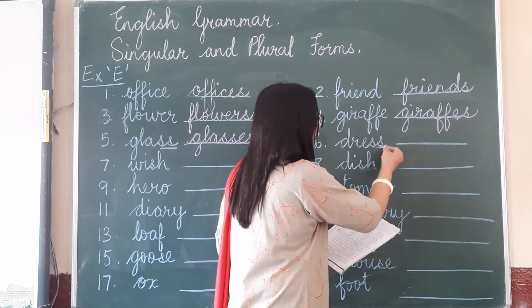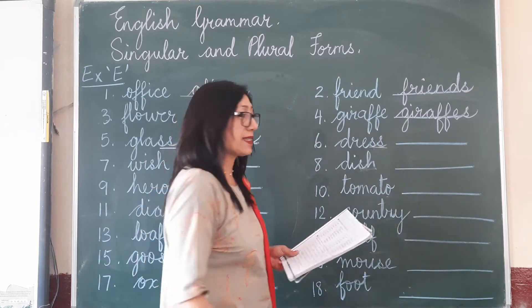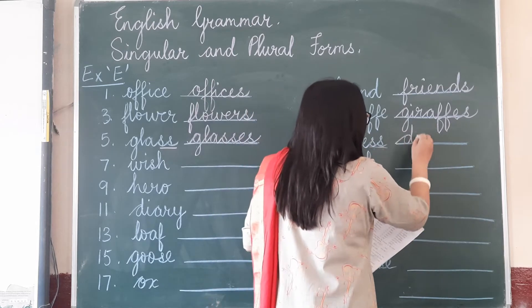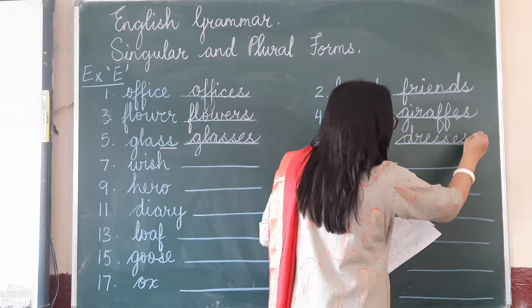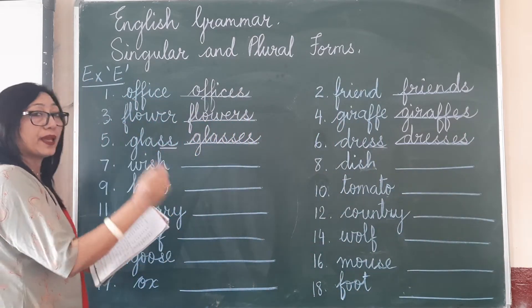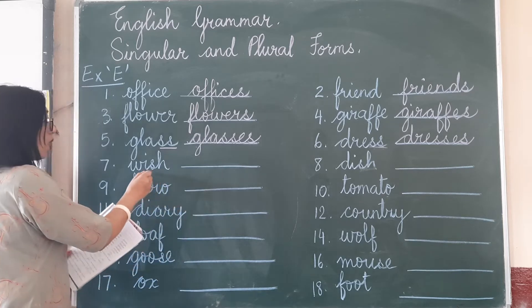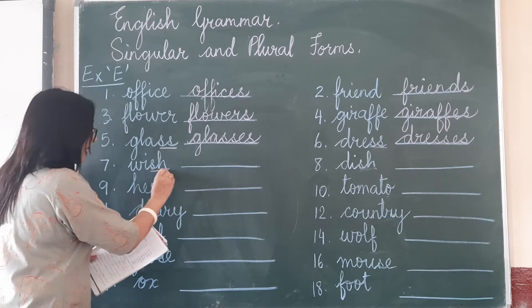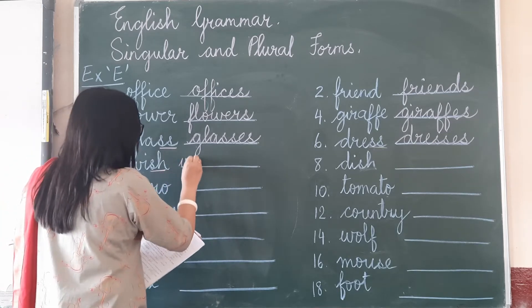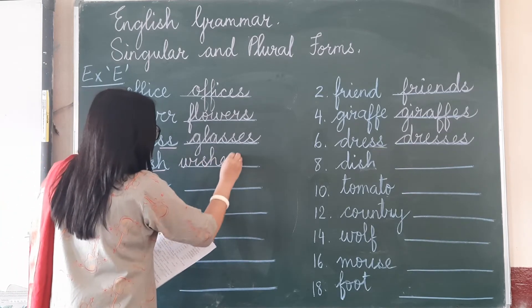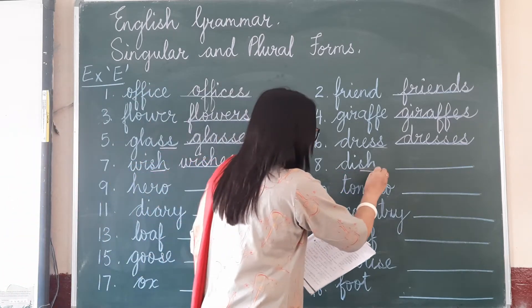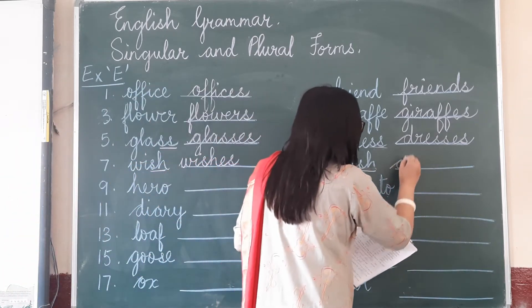Here again we have a noun ending in a hissing sound. One dress, many dresses — S-S-E-S, you're adding an E-S. So one dress, many dresses. One wish — again, you have a hissing sound, you have to add an E-S — many wishes. One dish, ending in a hissing sound, many dishes.